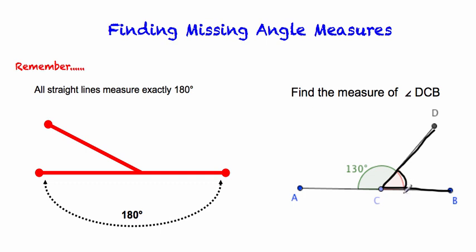The measure of it is going to be in between DC and B, which is just outside of C there where you can see that red arc. If we know that a straight line measures 180 degrees, and the angle that is supplementary to DCB, which is DCA, we're told is 130 degrees.